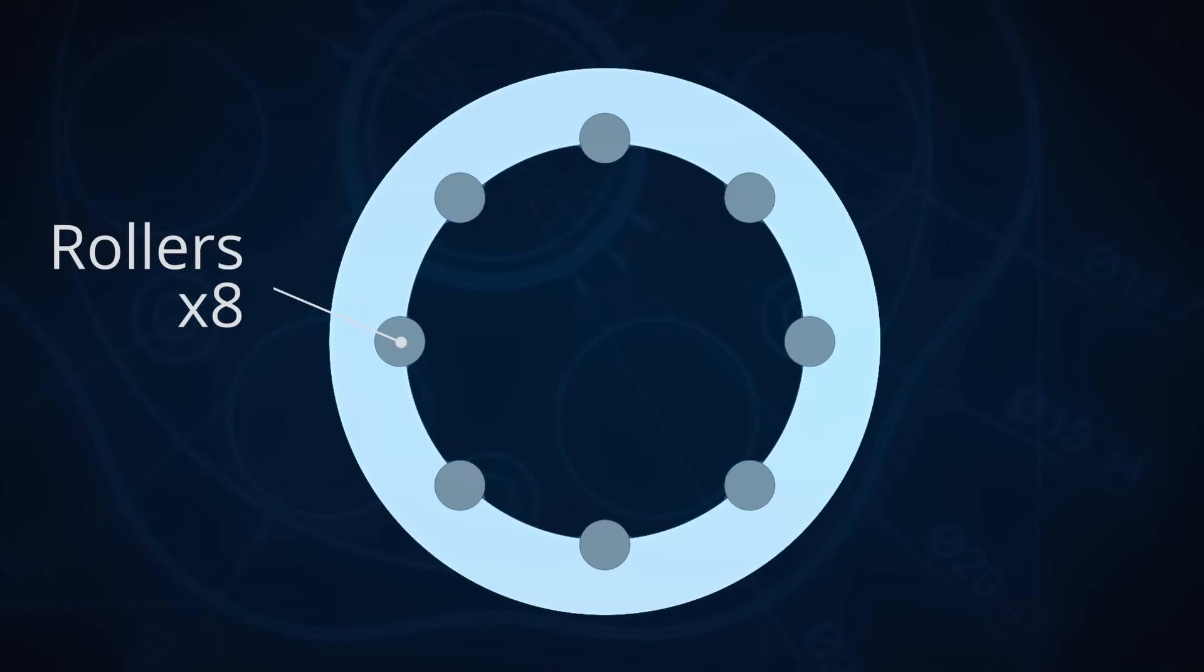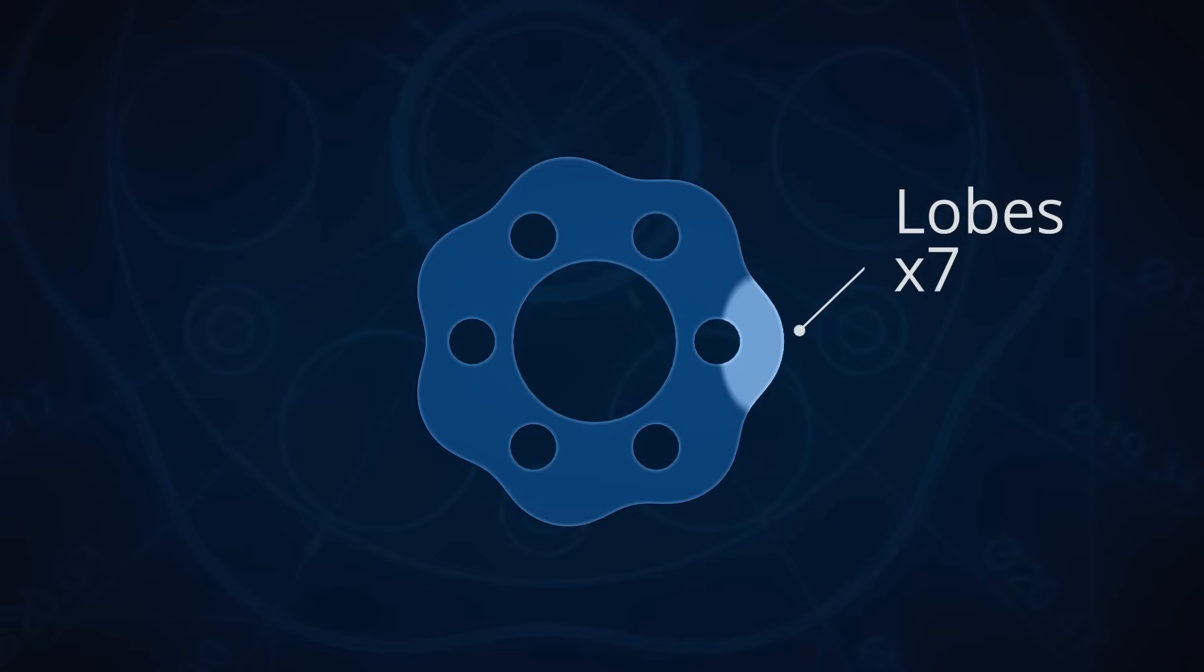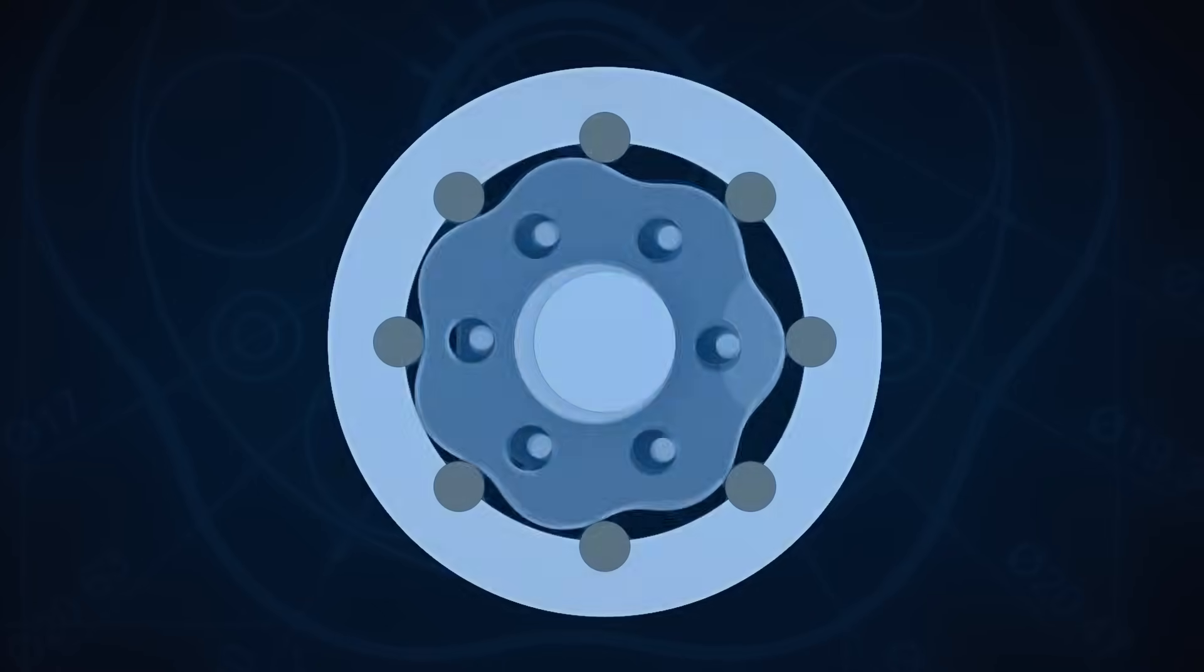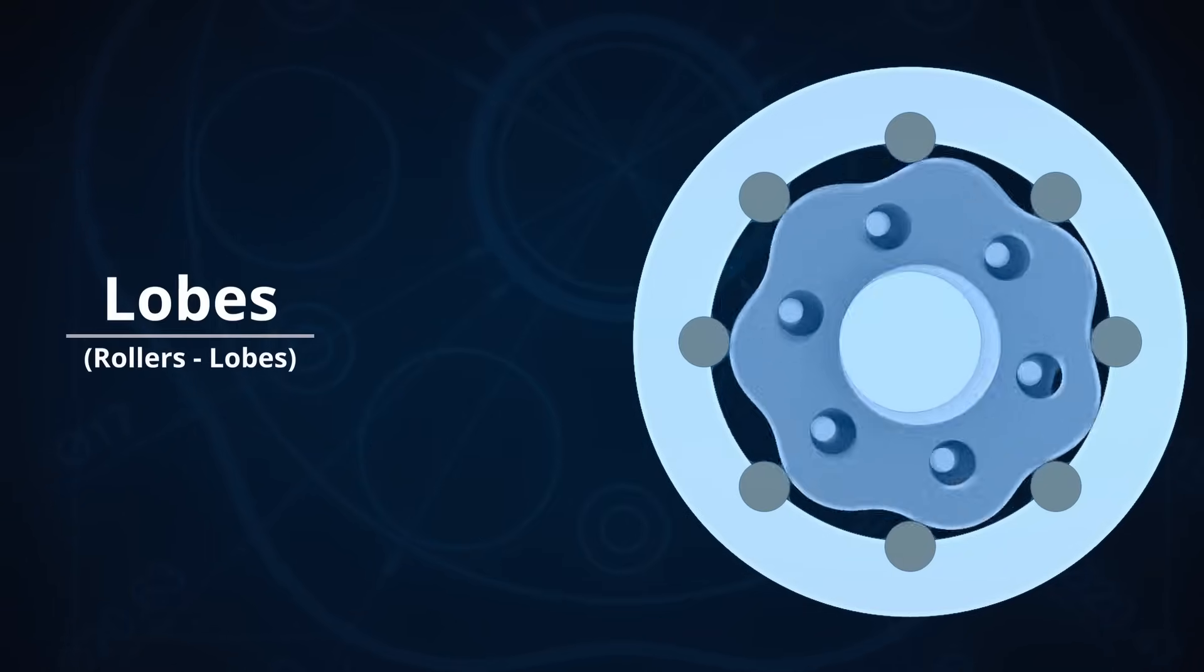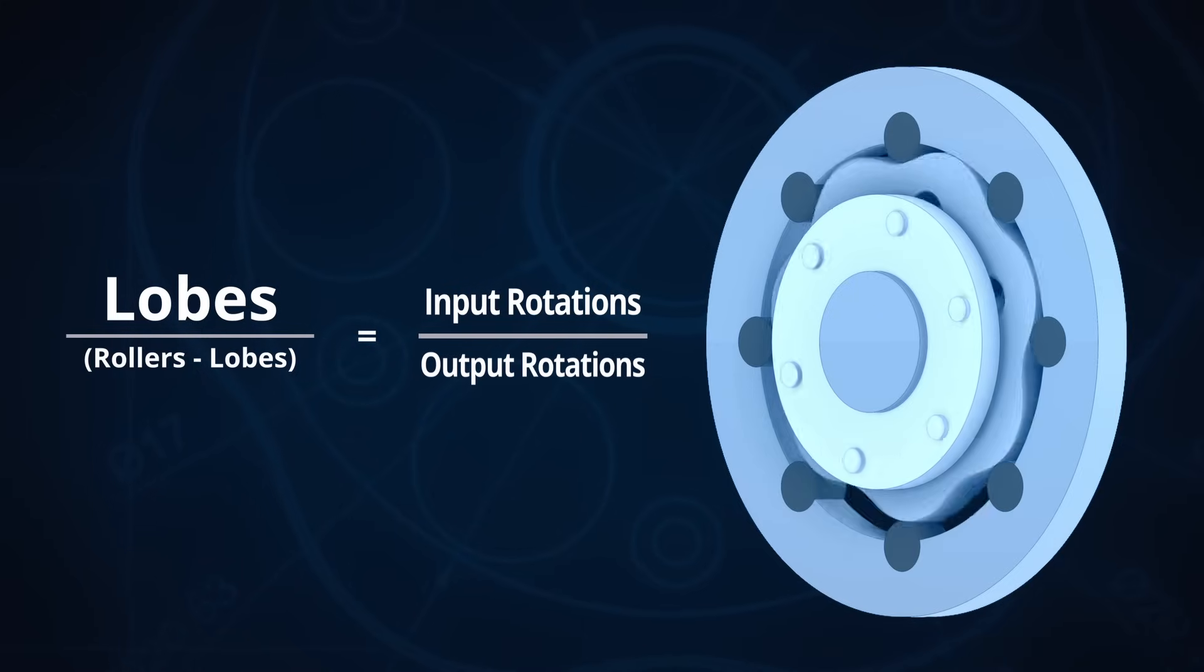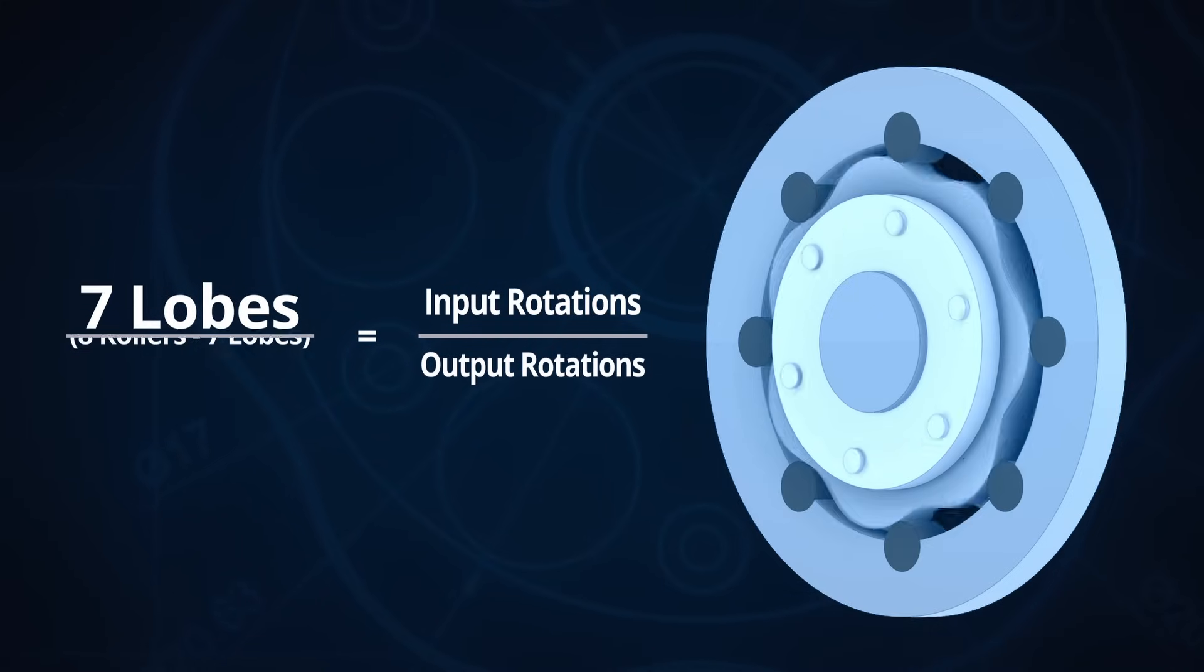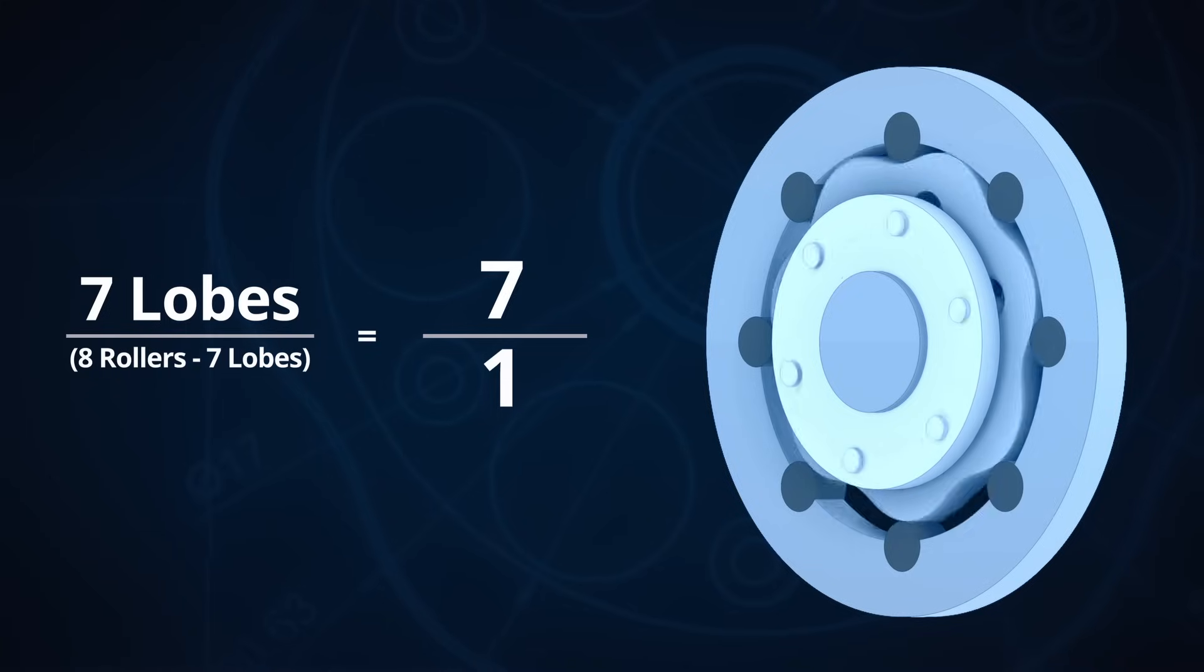For this example, we have eight rollers in the outer ring and seven lobes on our cycloidal disc. To keep it simple, the reduction ratio is determined by the number of lobes over the number of rollers minus the number of lobes. And this is almost always one. So in this case, the output ring is rotating seven times slower than the input.